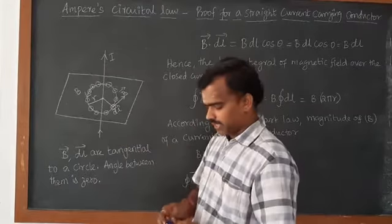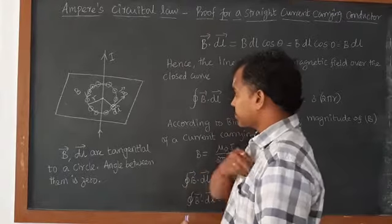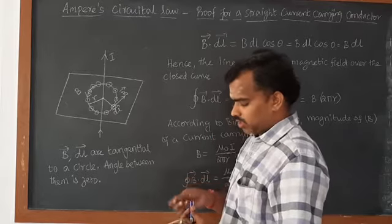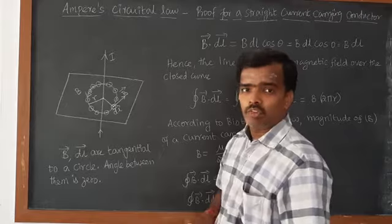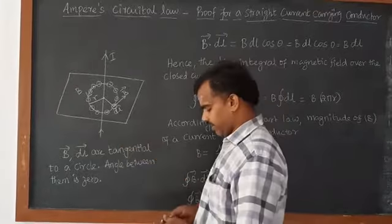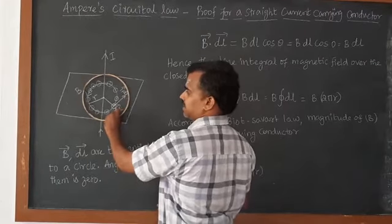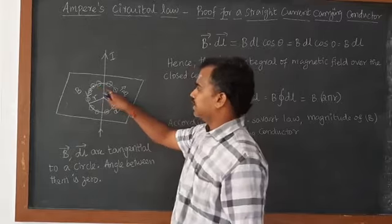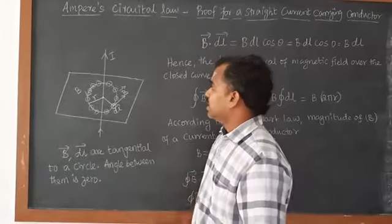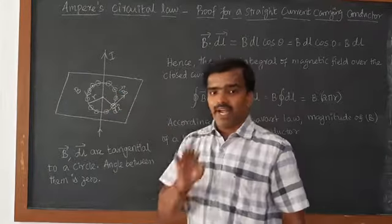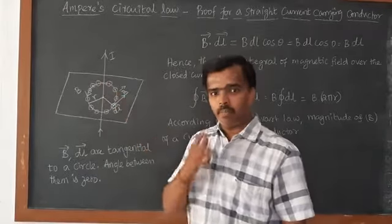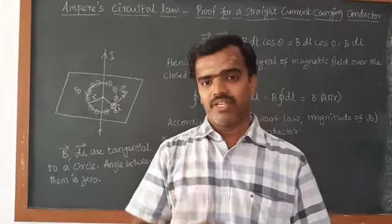The current is passing in the upward direction. What will happen is that the magnetic field will be produced. This circle represents the magnetic field. These small circles indicate the small element dL. At each and every point on this circle, the magnetic field remains the same — it is constant.